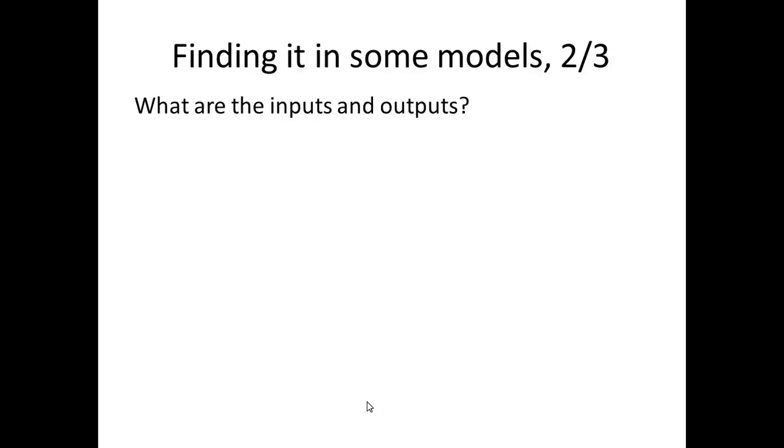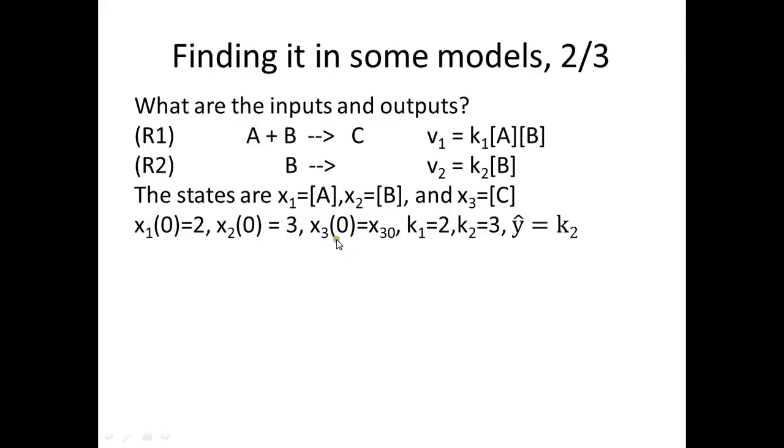I said this in some previous video as well: the measurements are not the thing that they measure. This is the simulated output, and this is just the state. This is inside the system and this is outside the system. They might have the same value if you have a specific measurement equation that looks like this, but they are still different types of entities. Second model. Question: what are the inputs, what are the outputs? We specified this example in the previous two videos. Now let's just look for the inputs and the outputs. Here we see that there is no u anywhere, so this system simply doesn't have any input. We have one measurement equation y-hat which is equal to k2, the rate constant of the second rate expression.